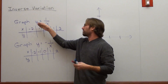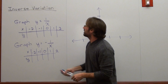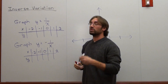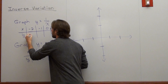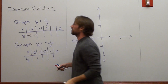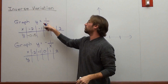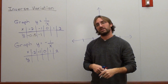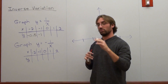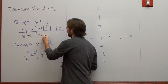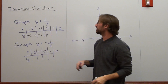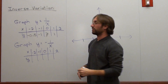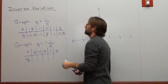So I've got to graph y equals 1 over x. If I substitute in negative 2, 1 over negative 2 is negative 0.5. If I substitute in negative 1, 1 divided by negative 1 is negative 1. If I substitute in 0, 1 divided by 0 is undefined — and this is actually really cool. 1 divided by 1 is 1, and 1 divided by 2 is 0.5.